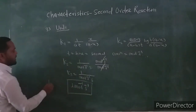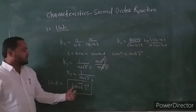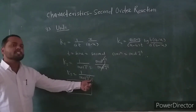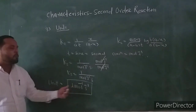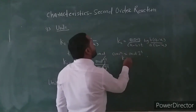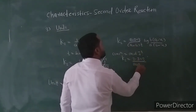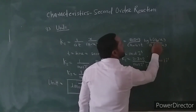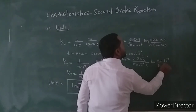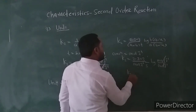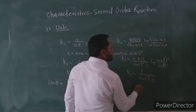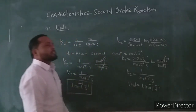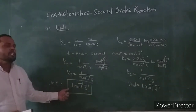The unit of the second-order reaction rate constant is liter per mole per second. This can also be verified using the equation for unequal initial concentration: K2 equals 2.303 divided by (A minus B) into T, times log. Here (A minus B) is concentration in mole per liter, T is in seconds, and the log term is dimensionless with concentration terms cancelling, again giving units of liter per mole per second.